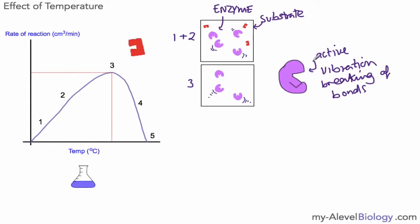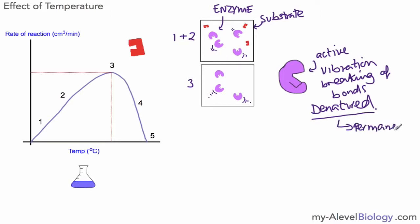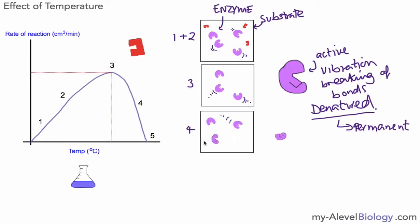The enzyme has lost its shape and the active site is no longer able to catalyse the reaction. We say that the enzyme is denatured — that's an important keyword. Don't say the enzyme has been 'killed'; it's been denatured. This change is permanent — you cannot get the active site back to its original shape once it has been destroyed in this way.